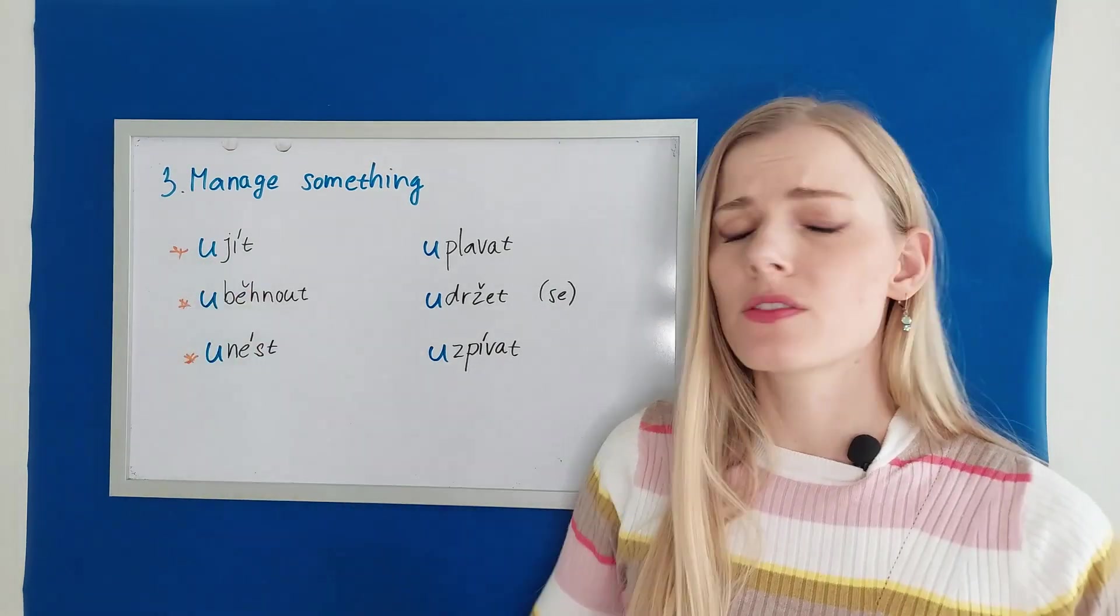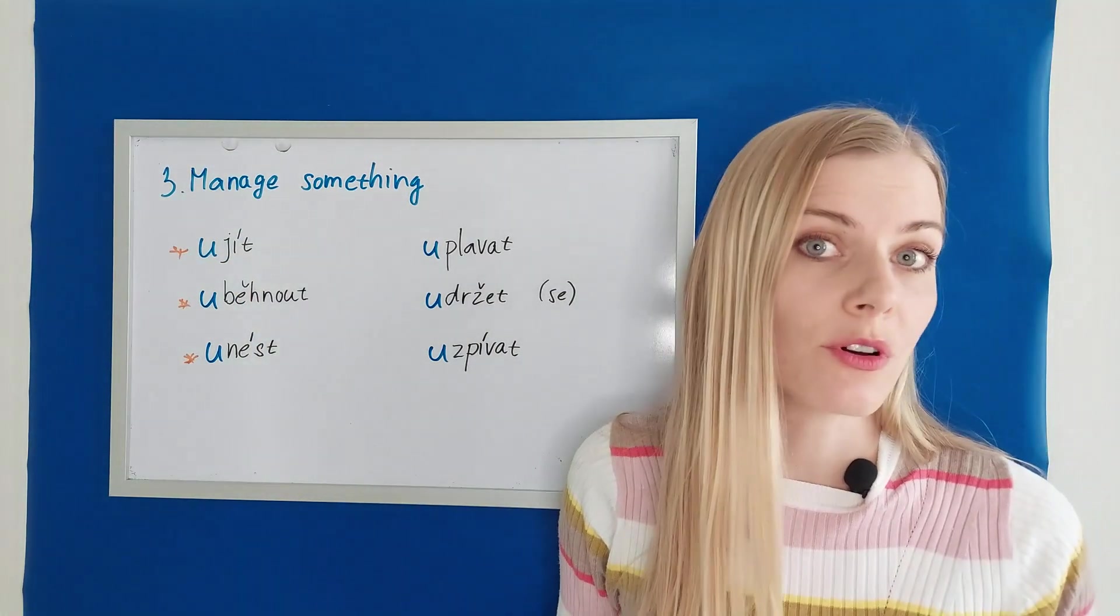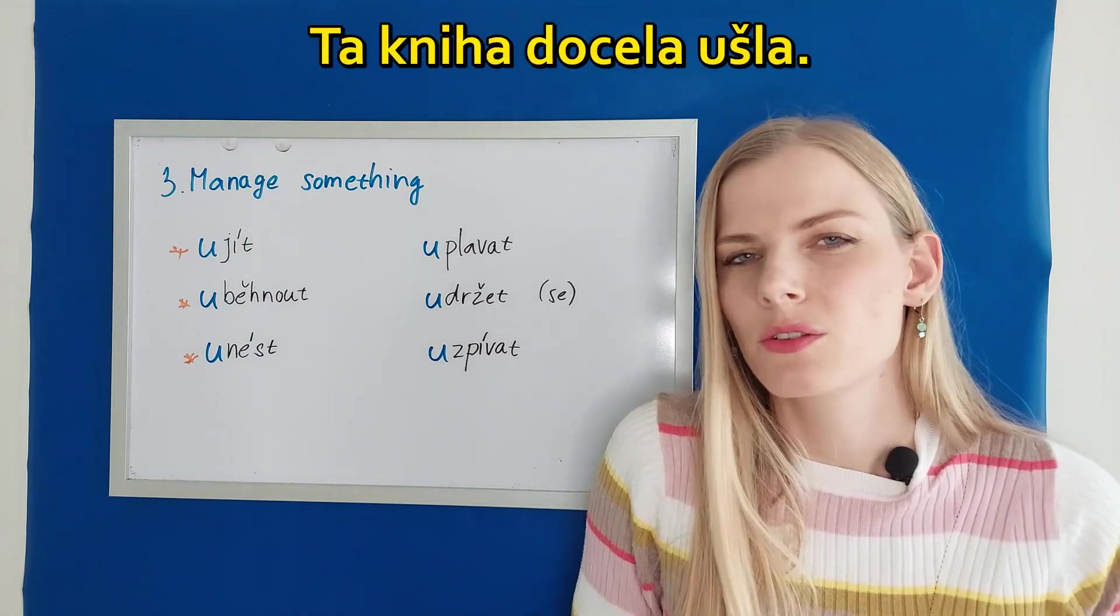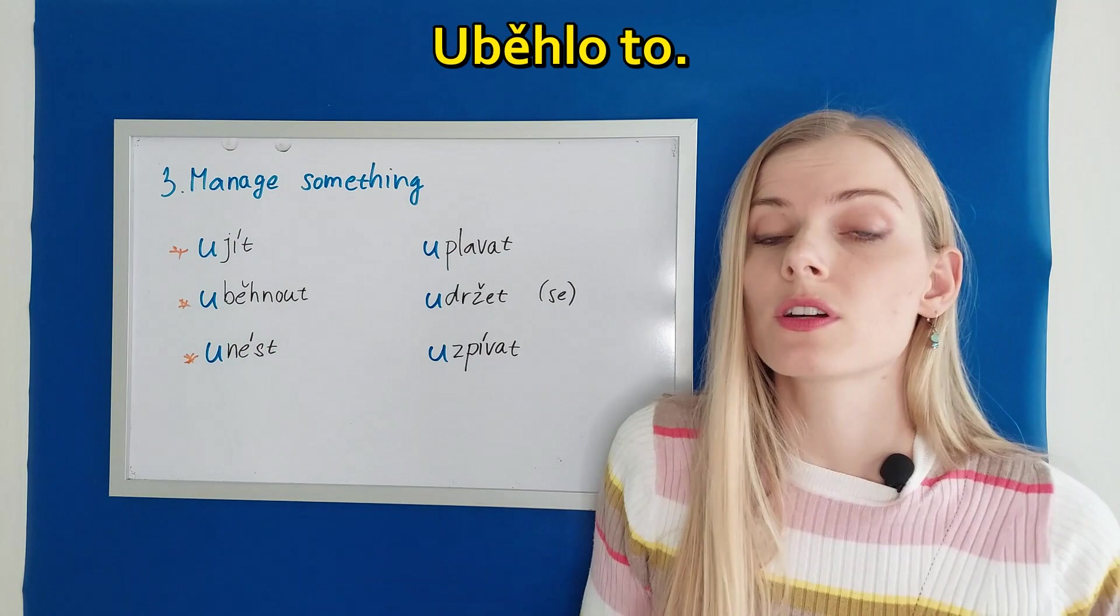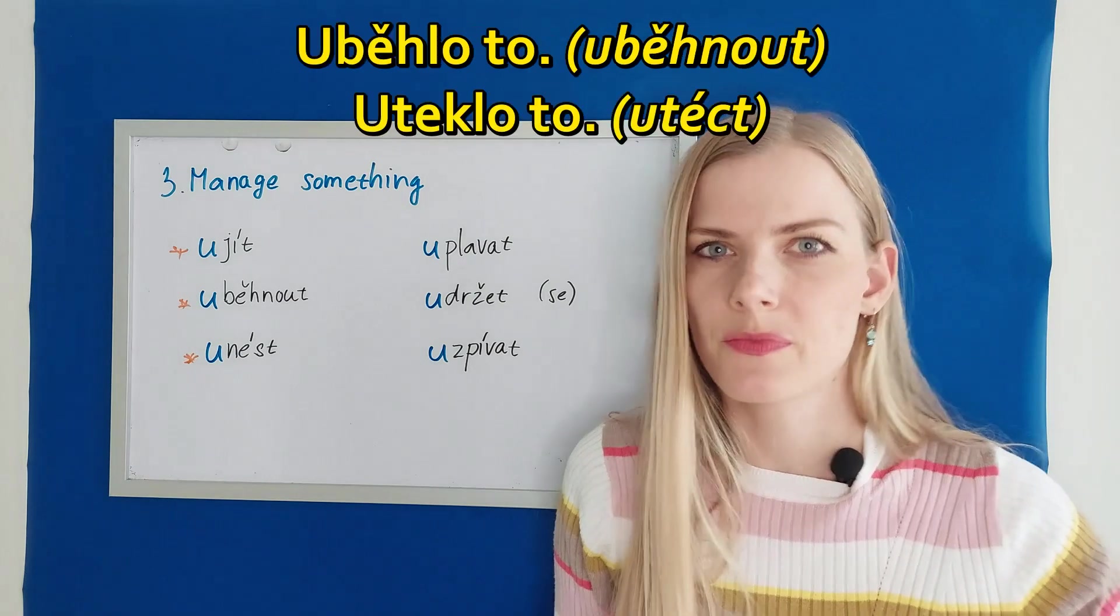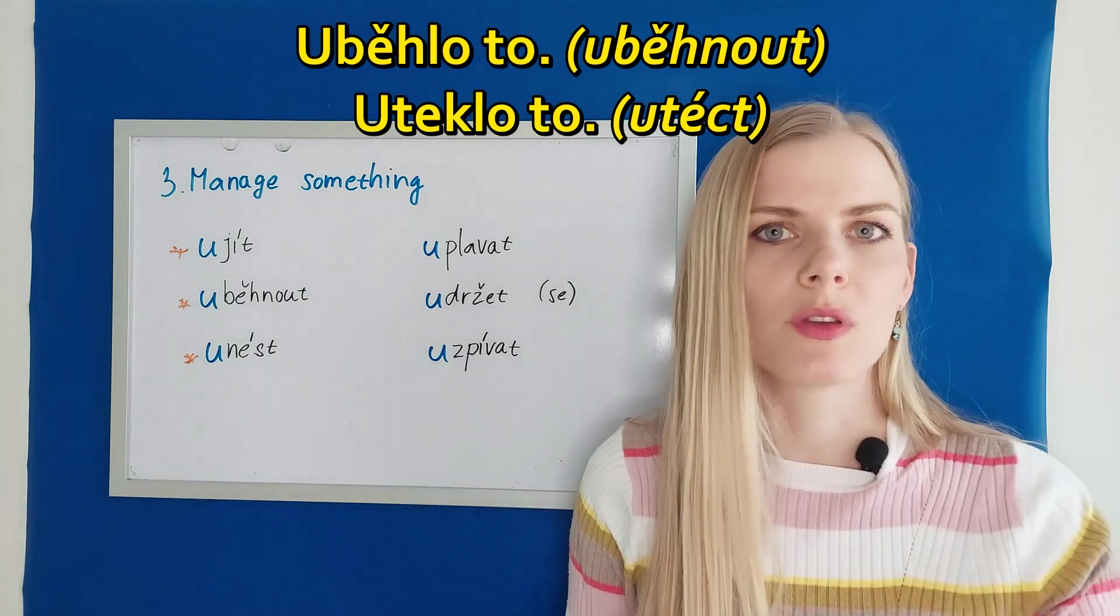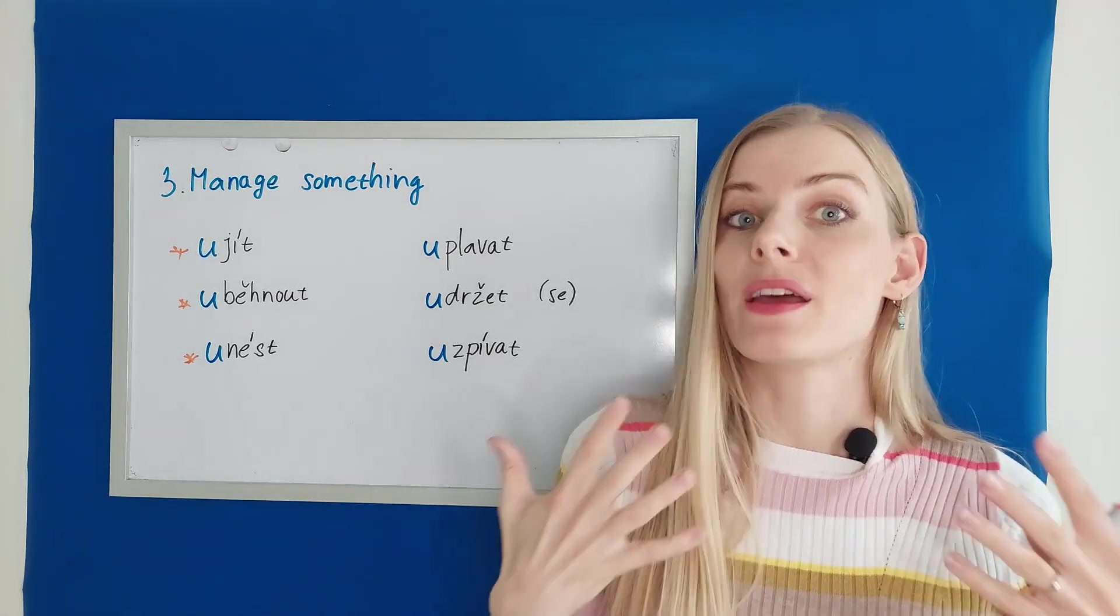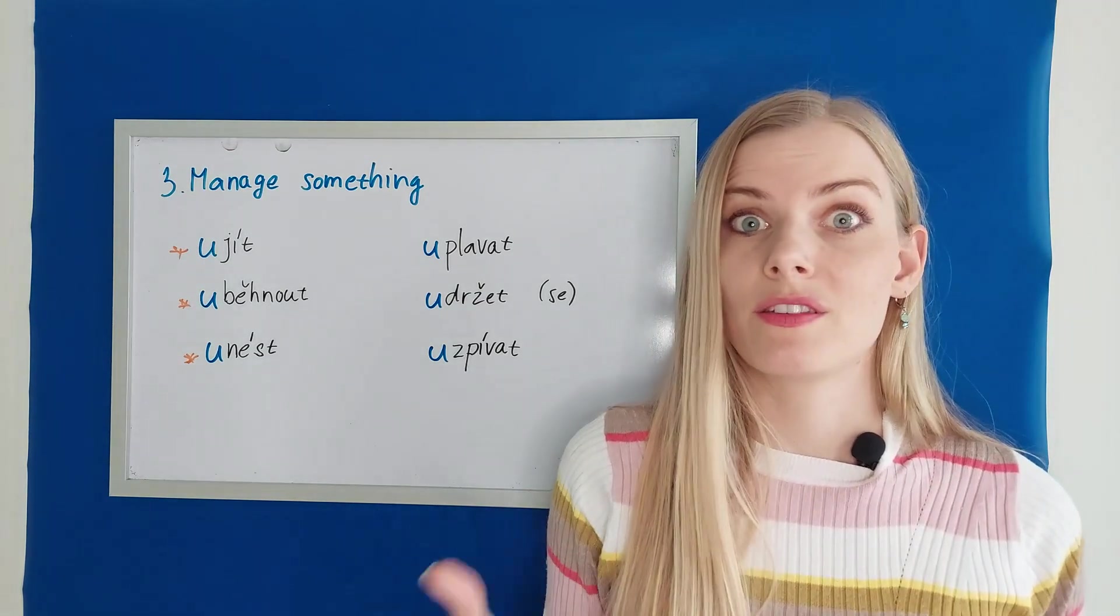Because jít is a verb that appears in many other phrases other than walking. But ujít you might know from the phrase ujde to. Somebody asks you, jak se máš? Ujde to? It's okay. It's going. Ta kniha docela ušla. The book was okay. So the meaning would be a little bit different here. Uběhlo to can refer to the time. It ran away so quickly. Actually, we can also say uteklo to from the verb utéct to run away. So uteklo to rychle. It passed away so quickly. And unést, I could also say that I can bear something. Tohle unesu. Nebo tohle neunesu. I will be able to bear this or not bear this.